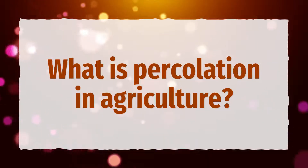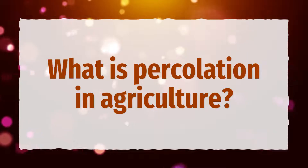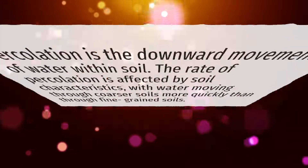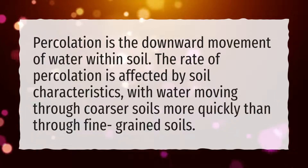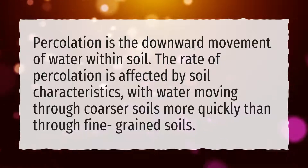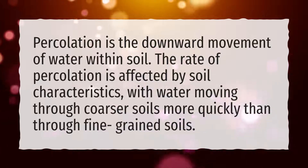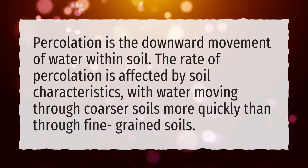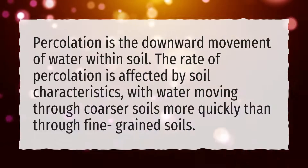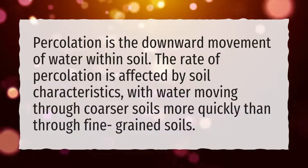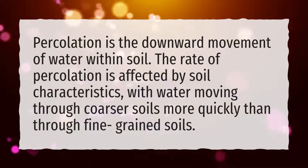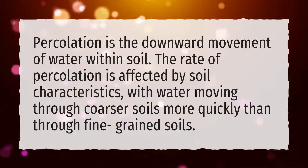What is percolation in agriculture? Percolation is the downward movement of water within soil. The rate of percolation is affected by soil characteristics, with water moving through coarser soils more quickly than through fine-grained soils.